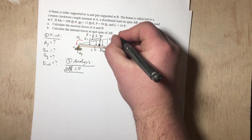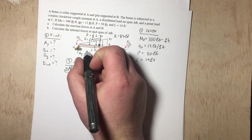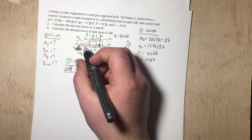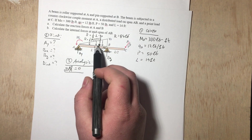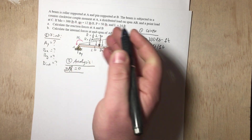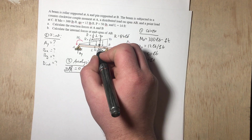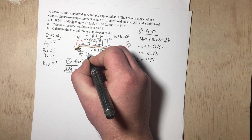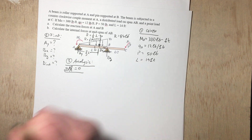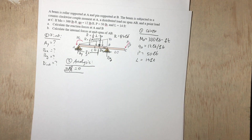The resultant turns out to be 84 pounds. Next, we calculate the distance at which this resultant force is applied. Since this is a triangular load, the distance is two-thirds from the pointy side of the triangle — so two-thirds of L from point A toward B.